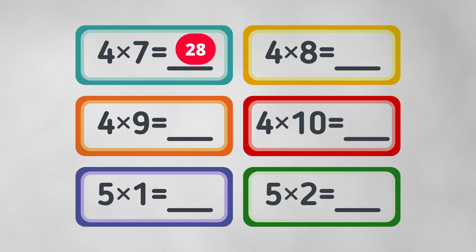Four times seven equals twenty-eight. Four times eight equals thirty-two. Four times nine equals thirty-six. Four times ten equals forty.